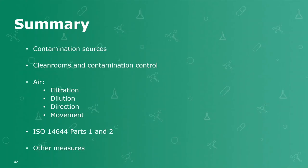This brings the main part of the webinar to a close. We've covered contamination sources, the way clean rooms are designed to reduce contamination — good air filtration, good air dilution, appropriate air direction and air movement — then the standards and what they require for clean room certification, and some of the other measures. The key point for any microbiologist is to make sure you're getting this information from your engineering department, because it's critical for understanding contamination control.